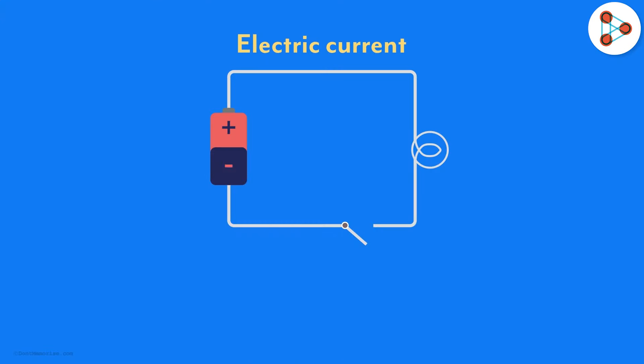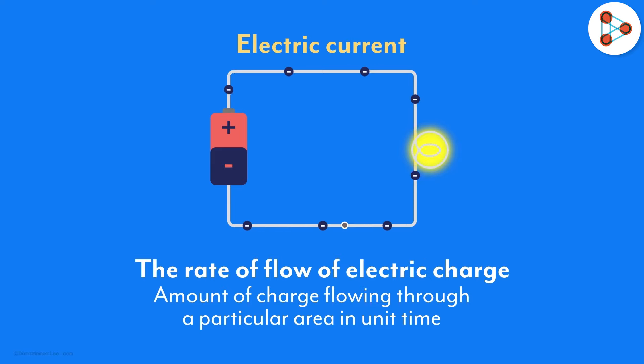Ok, so coming back to the main point of electric current. How would we define it? It is simply the rate of flow of electric charge, which means it is the amount of charge flowing through a particular area in unit time. More the charge flowing in unit time, more will be the electricity.